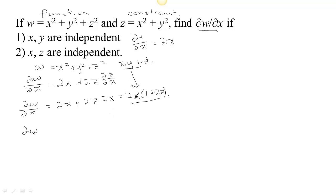Now let's do this derivative again. This time we're going to assume that x and z are independent. Going back to our definition of w, we take the derivative of x squared with respect to x and get 2x. But if x and z are independent, that means x and z determine y, so y actually depends on z and x. When we take the derivative of y squared, y is a function of x, so we get 2y times the derivative of y with respect to x. And since x and z are independent, the derivative of z squared with respect to x is 0.